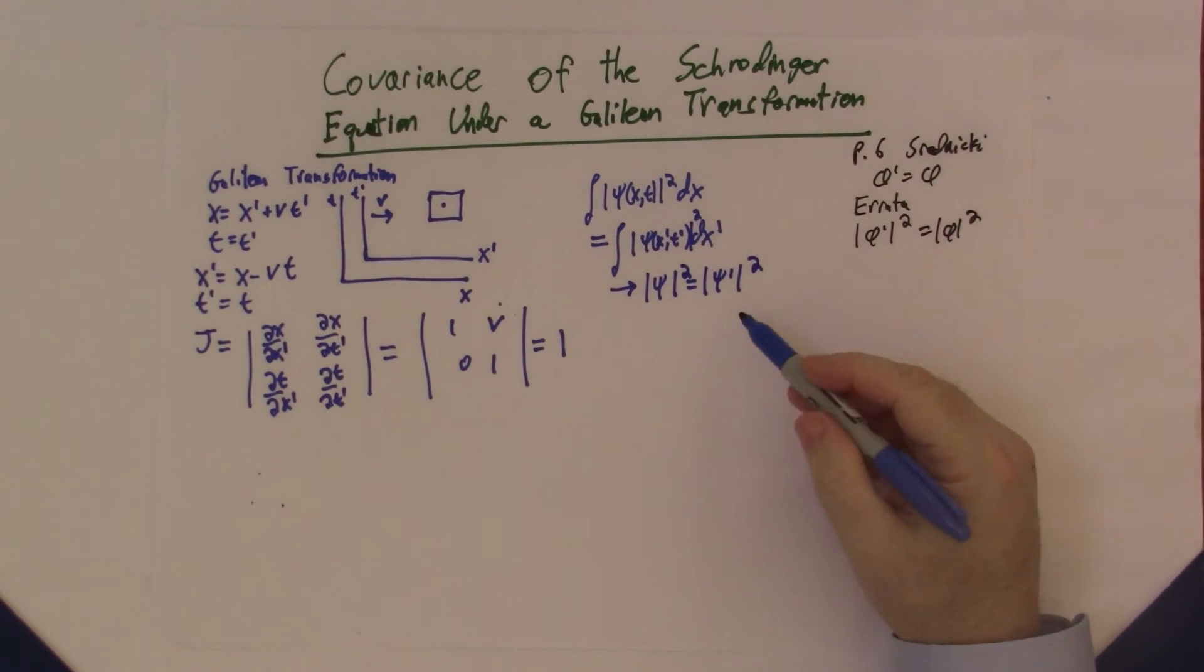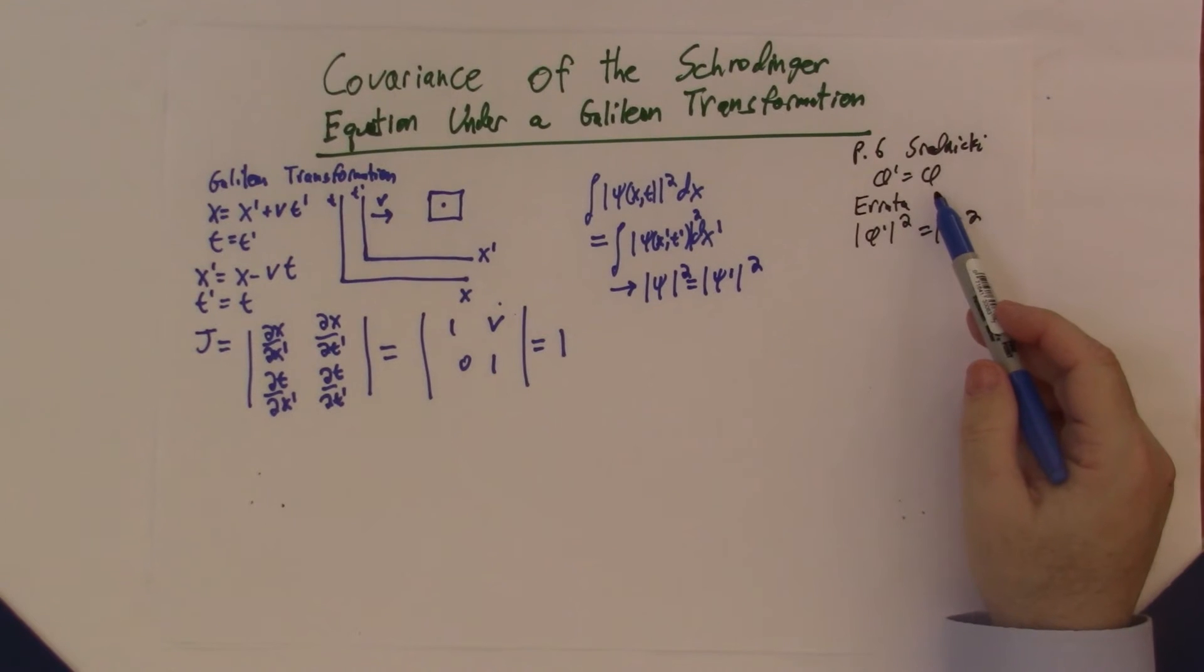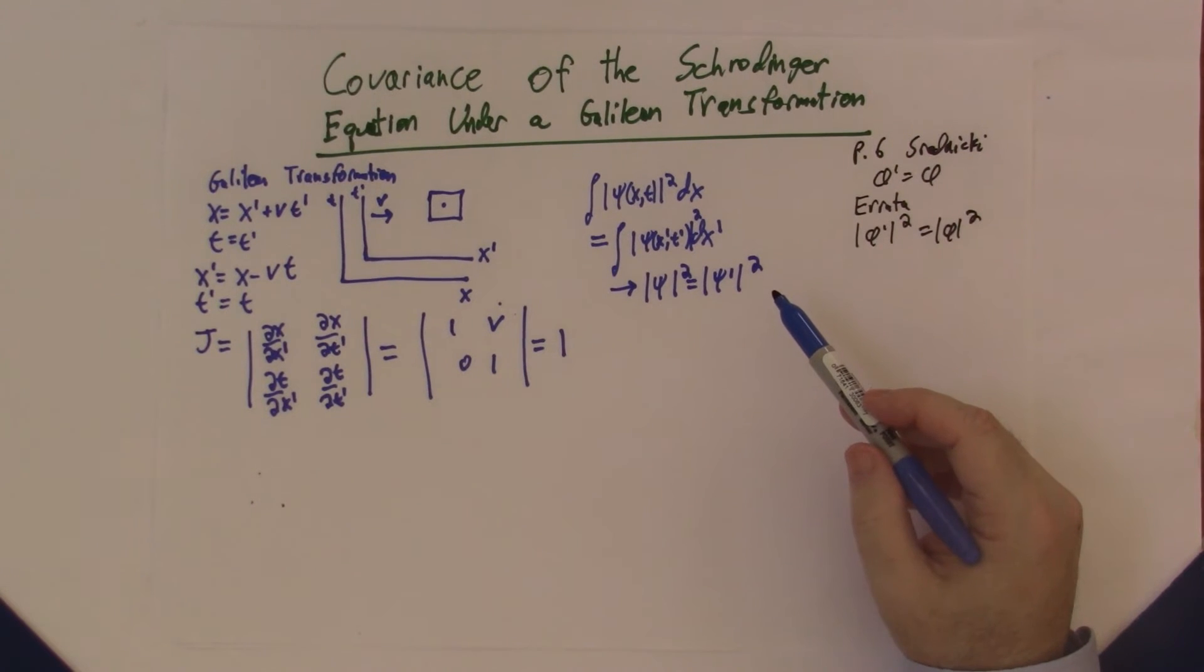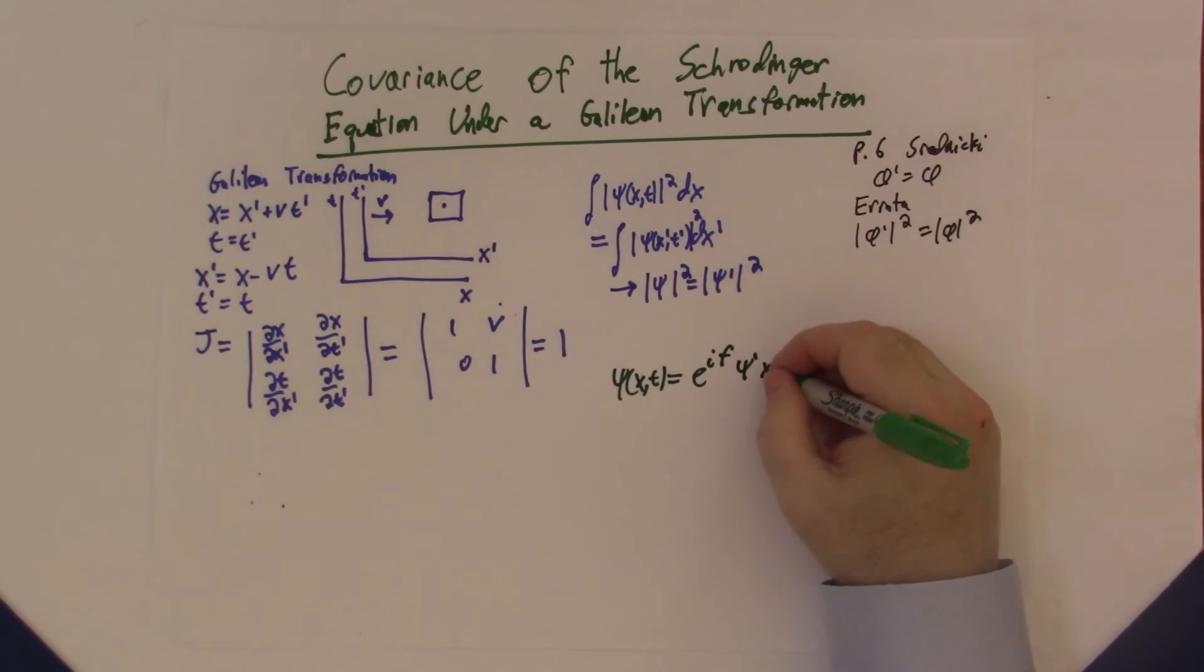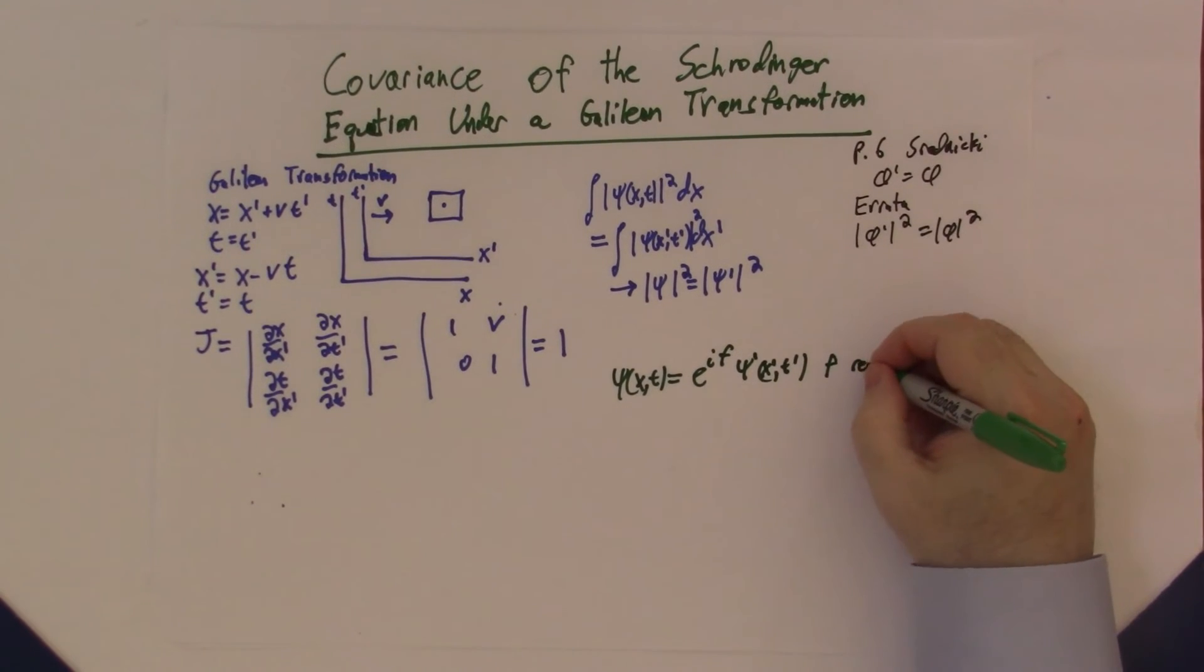that |ψ|² = |ψ'|². You might think this leads to ψ = ψ', like we were doing in quantum field theory. But it actually doesn't, because we can have a phase here. So what we really are going to get is that ψ(x,t) = e^(if) ψ'(x',t'), where f is real and is a real function of the coordinates.